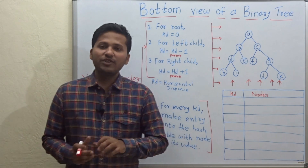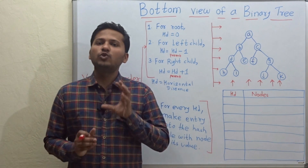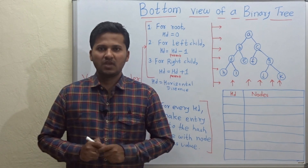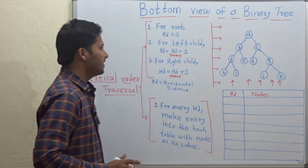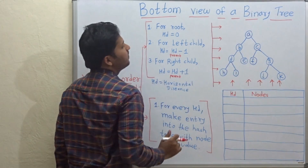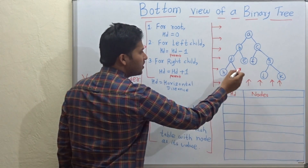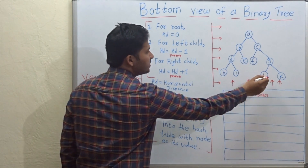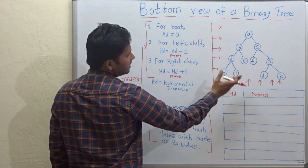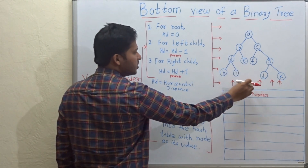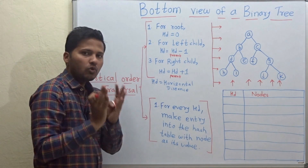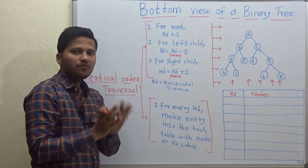Hello friends, today we are going to see how to print the bottom view of a binary tree. So let's see the example. This is the binary tree and we are going to print the bottom view of this binary tree, which means if we look at this tree from the bottom, then which nodes will be visible.